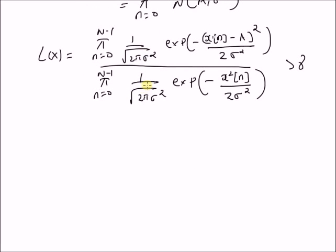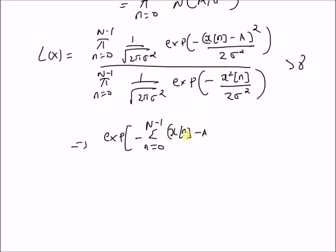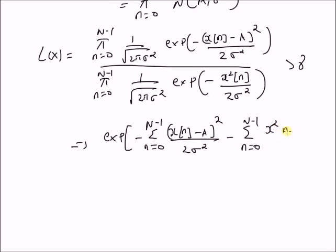Clearly, the normalizing constants in the numerator and the denominator cancel each other. So we are left with exp(- sum_{n=0}^{N-1} (x(n) - A)^2 / (2*sigma^2)) minus sum_{n=0}^{N-1} x(n)^2 / (2*sigma^2), and this should be greater than gamma.